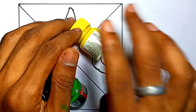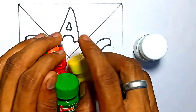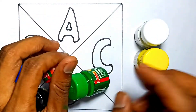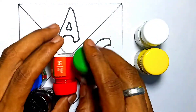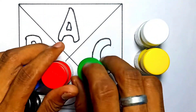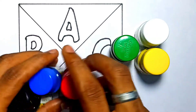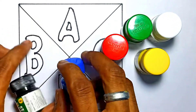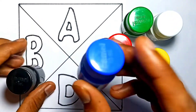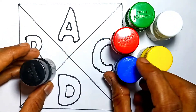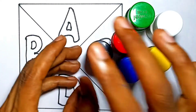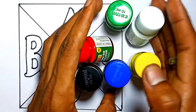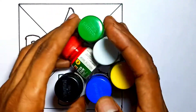White color, yellow color, green color, red color, blue color, and black color.